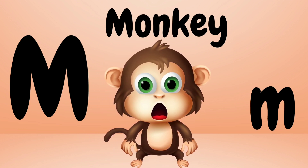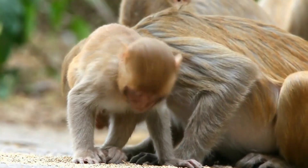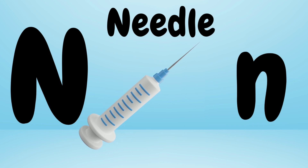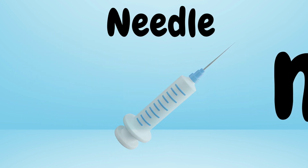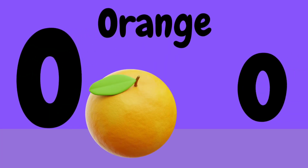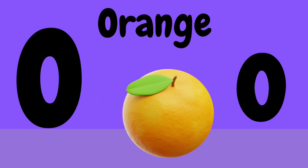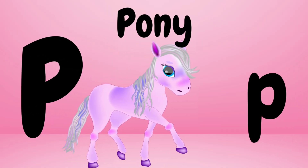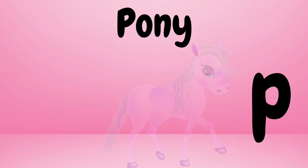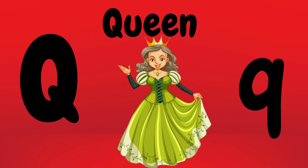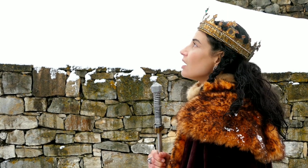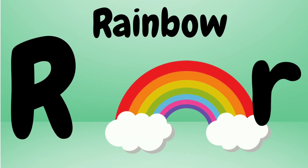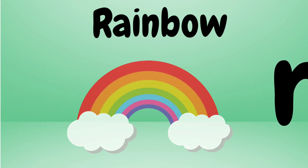L is for Ladybug. Ladybug, ladybug. This is the ladybug. M is for Monkey. Monkey, monkey. This is the monkey. N is for Needle. Needle, needle. This is the needle. O is for Orange. Orange, orange. This is an orange. P is for Pony. Pony, pony. This is the pony.